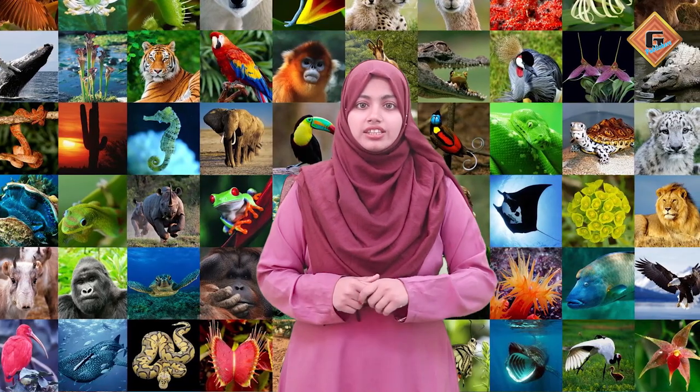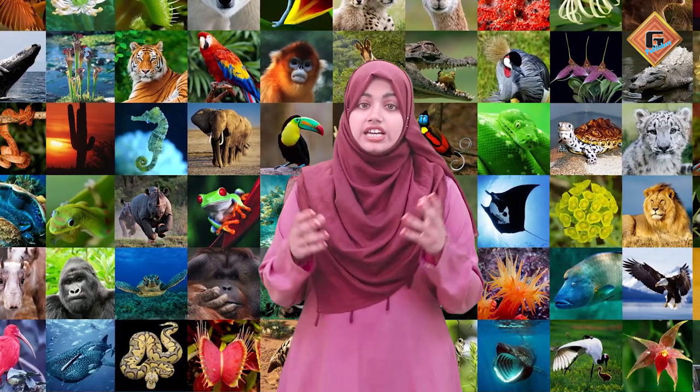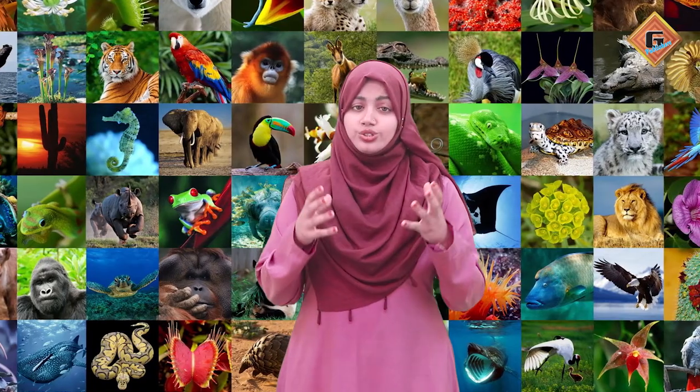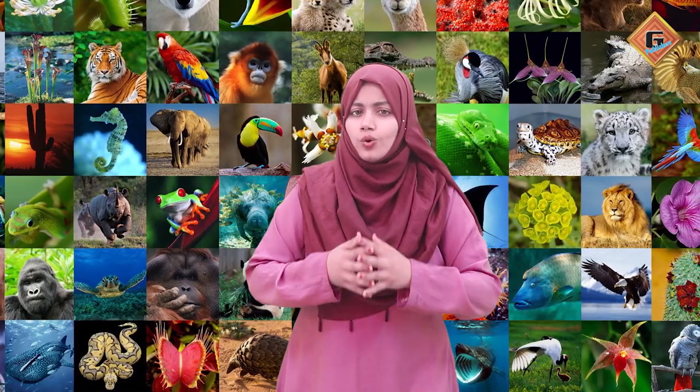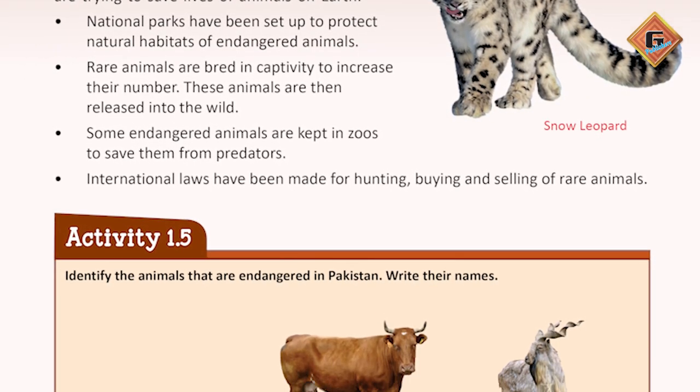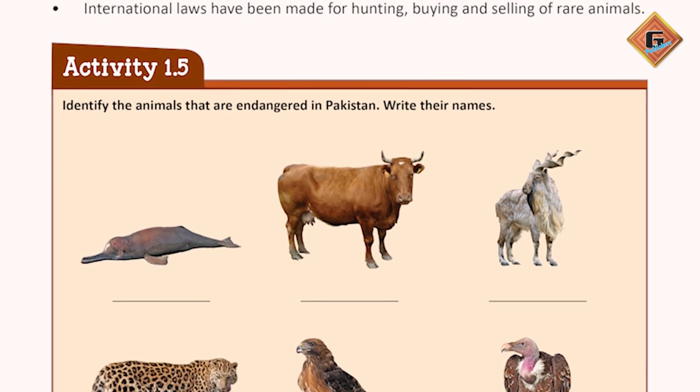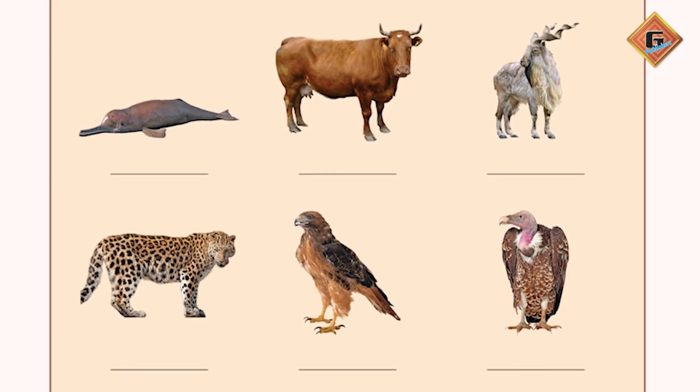So students, today you have learned many interesting things. You learned about biodiversity, about endangered species, about conservation of endangered species, and about why extinction happens and its causes. Now we move towards a very amazing activity on page number 19 of your book, where you can see pictures of animals and you have to identify and write down the endangered species from among them. Take good care of yourself and the people around you. Allah Hafiz.